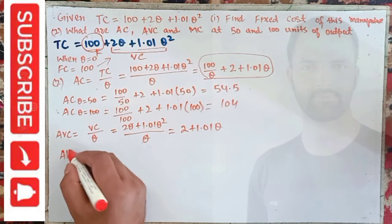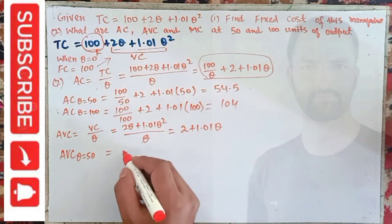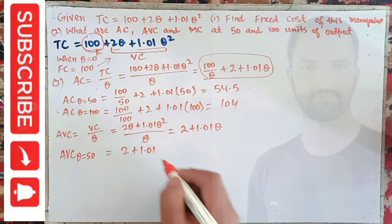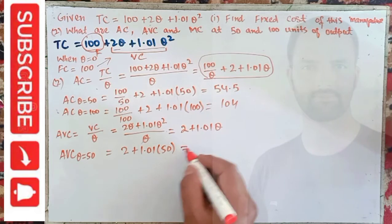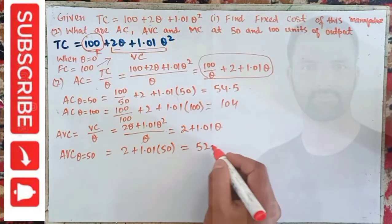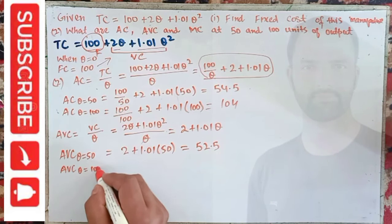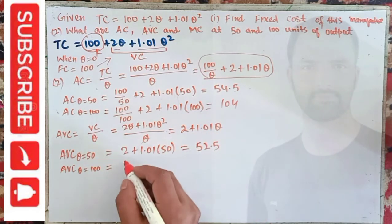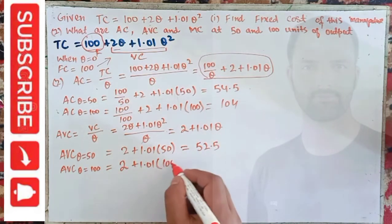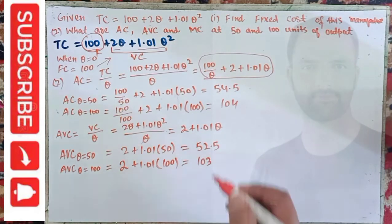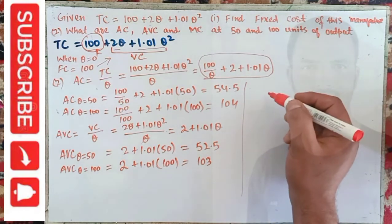Average variable cost when Q = 50: insert Q = 50, so we have 2 + 1.01 × 50, which comes out to be 52.5. Similarly, average variable cost when Q = 100: plug Q = 100, so we have 2 + 1.01 × 100, which comes out to be 103.